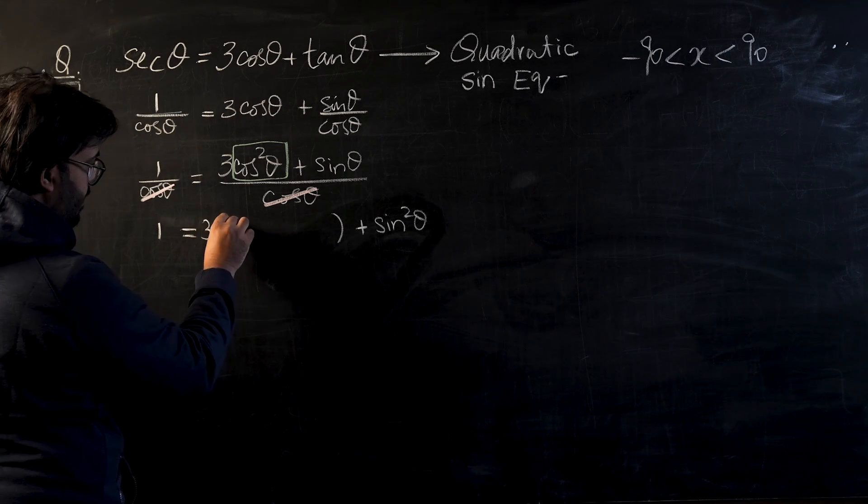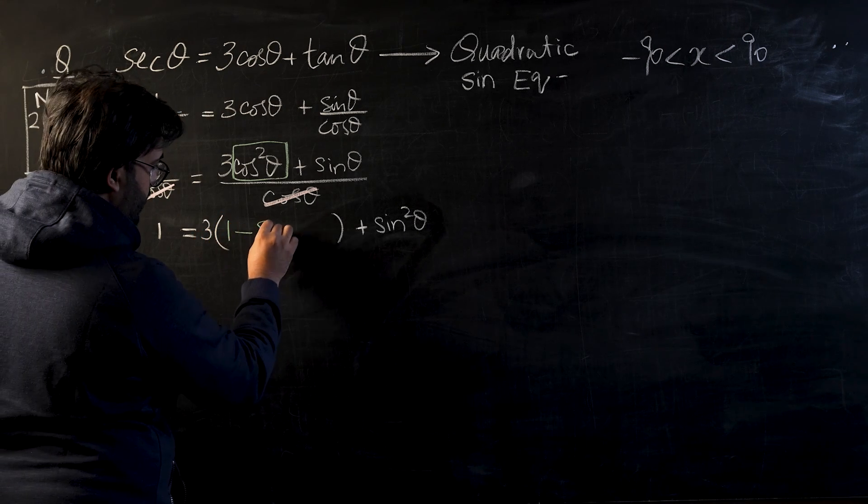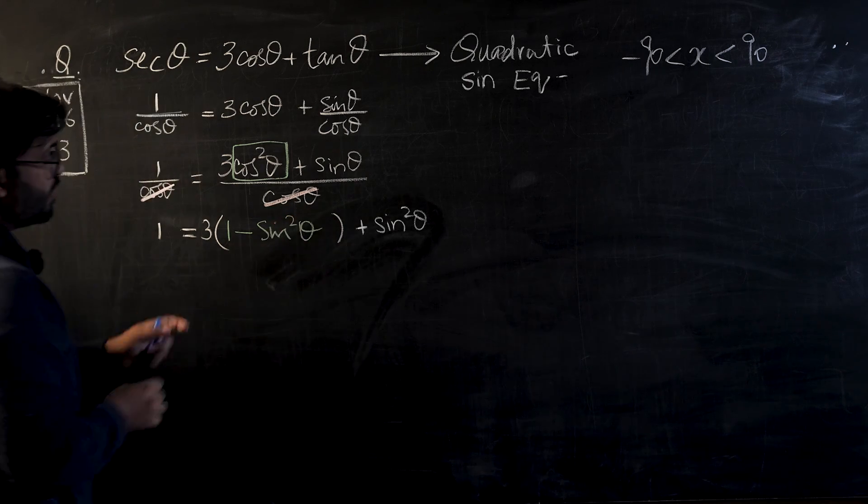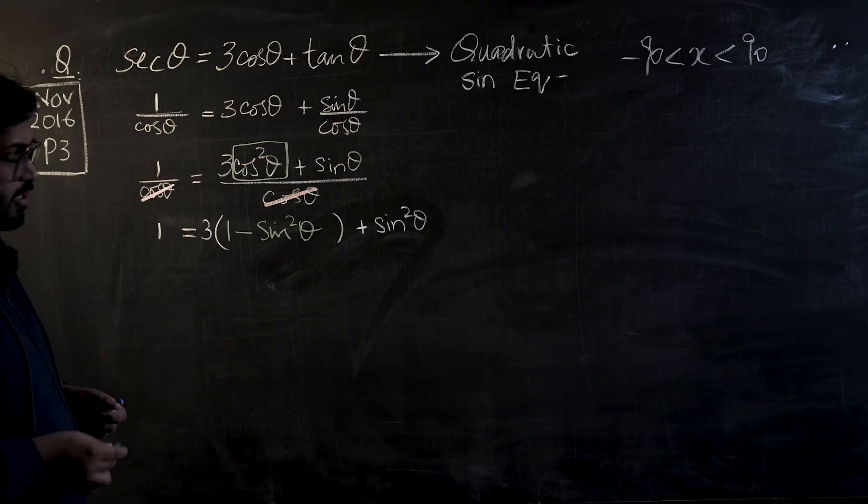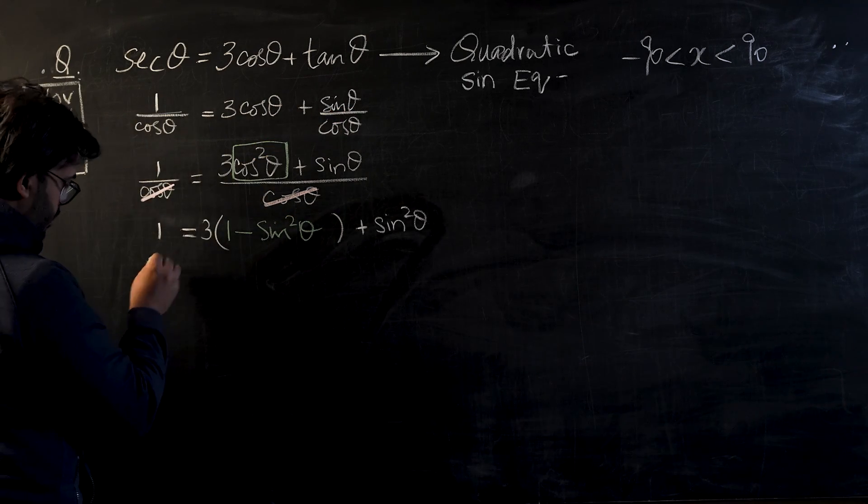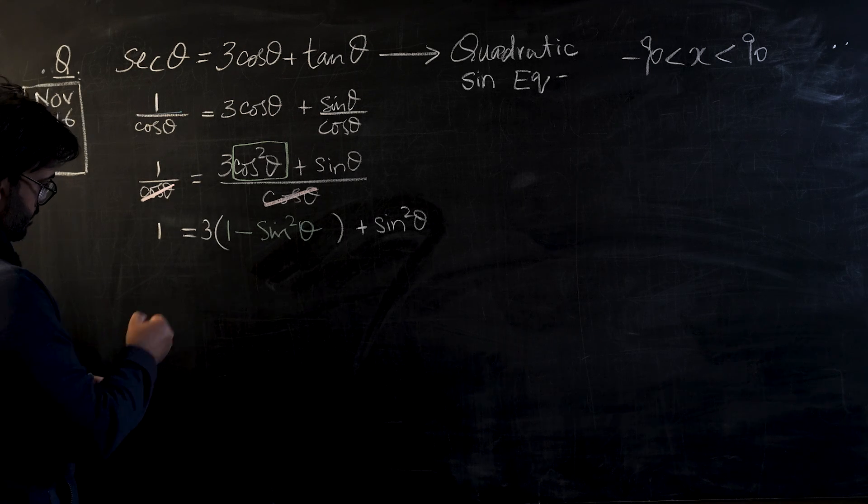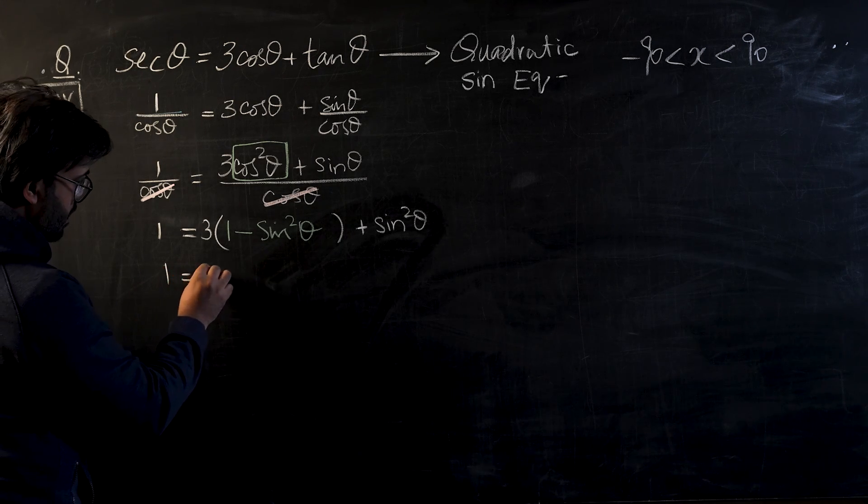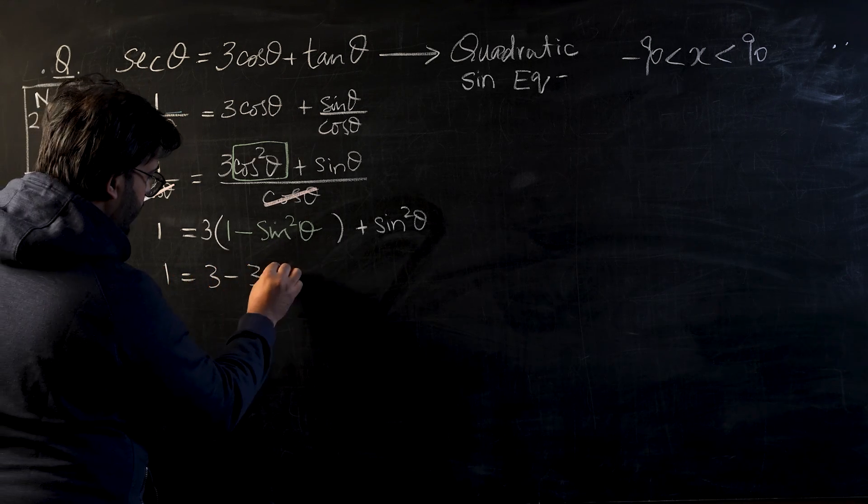So I would want to write 1 equals 3 times, so we will substitute the Pythagorean identity for here. So this cos² θ would become 1 minus sin² θ. And now we can see that we have come to a quadratic equation in sine.